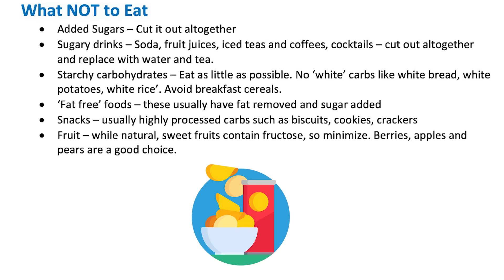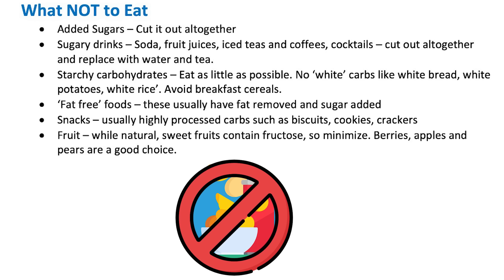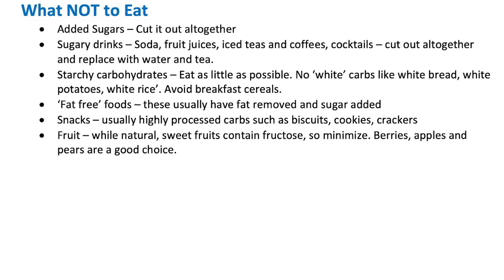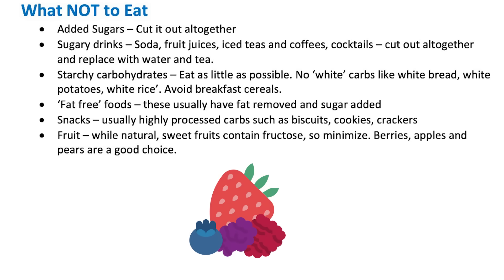Avoid snacks, because they tend to be highly processed carbohydrates. Biscuits, cookies, and crackers — refined carbohydrates can stay at room temperature almost indefinitely, making them a concentrated form of glucose you don't really need. You can eat more at your meals instead. As for fruits, they're not the worst thing, but they still contain fructose because they're sweet. Try to minimize them. Berries, apples, and pears are a good choice. Sweeter fruits such as bananas, mangoes, and grapes can raise blood glucose very high for some people.